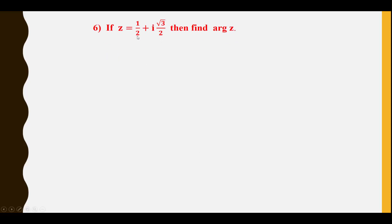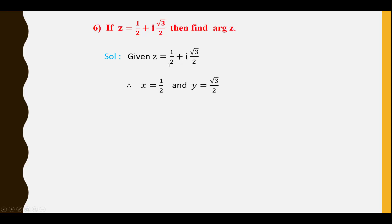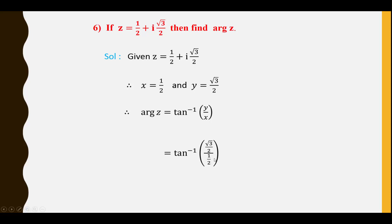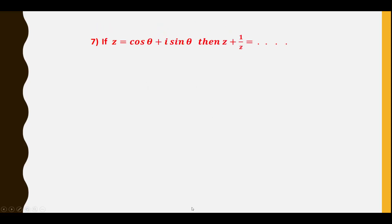Sixth question: If Z = 1/2 + i·(√3/2), find arg Z. Given x = 1/2 and y = √3/2. Argument Z = tan⁻¹(y/x) = tan⁻¹((√3/2)/(1/2)). The 2s cancel, giving tan⁻¹(√3) = π/3 (60°).